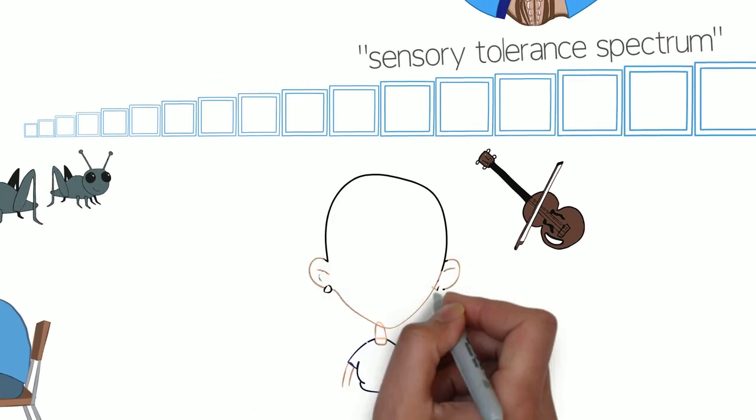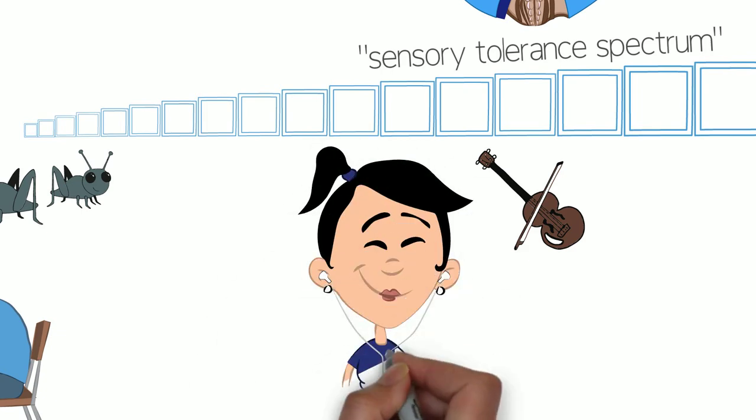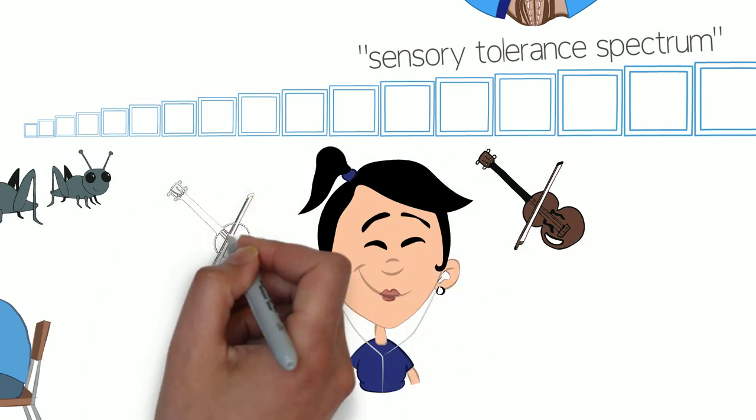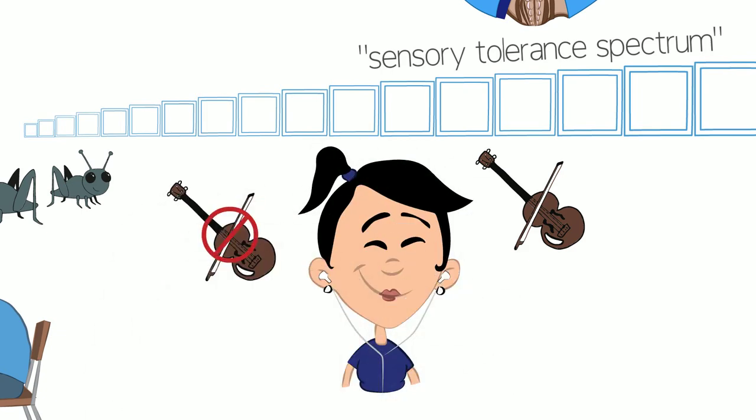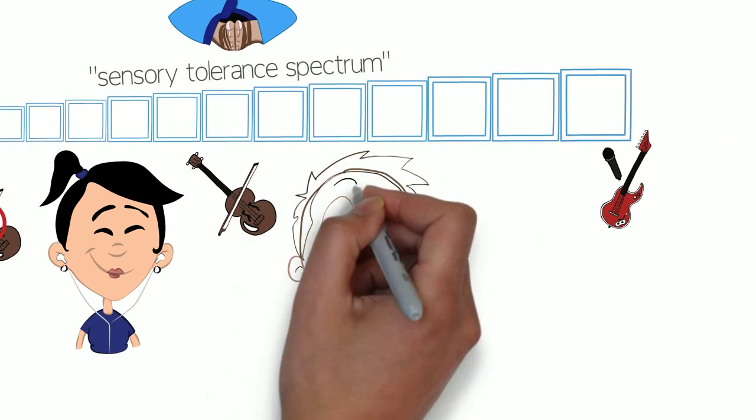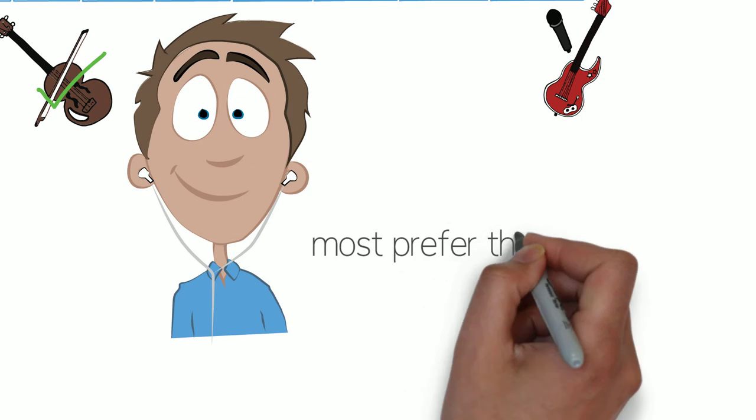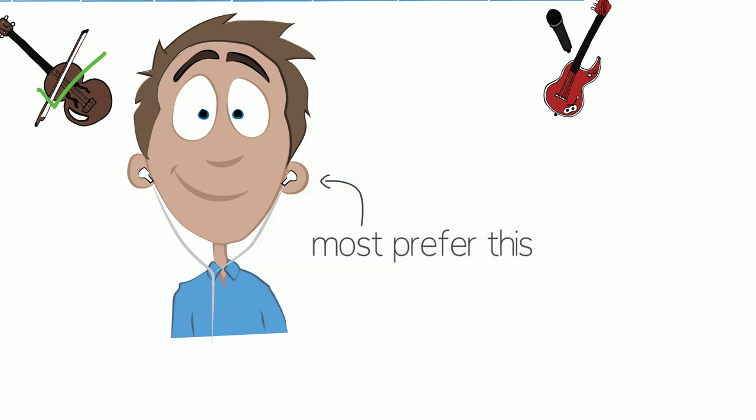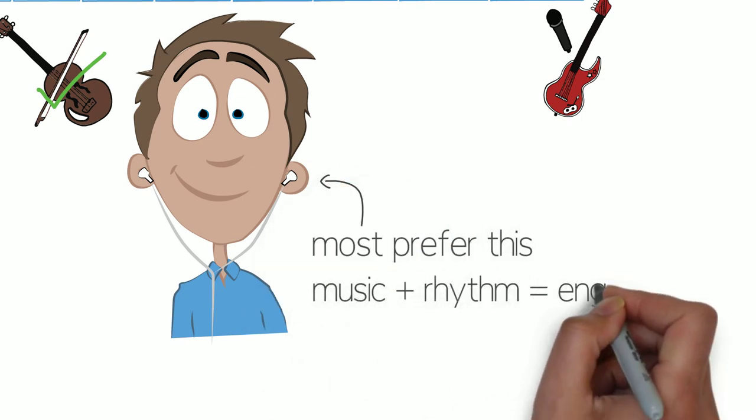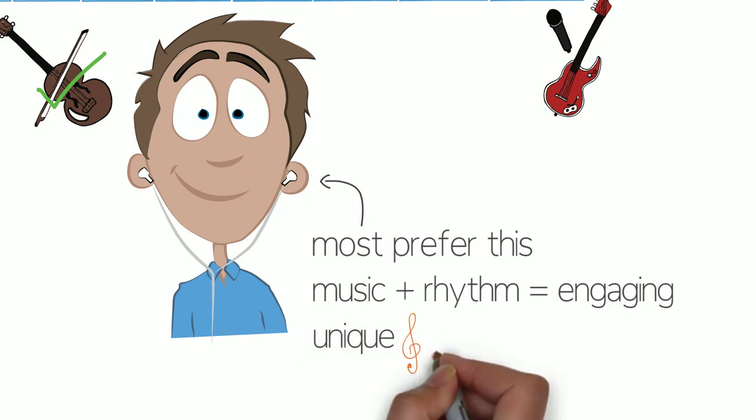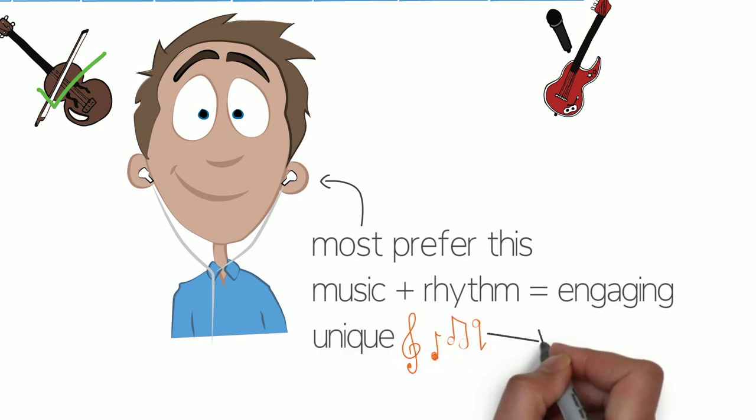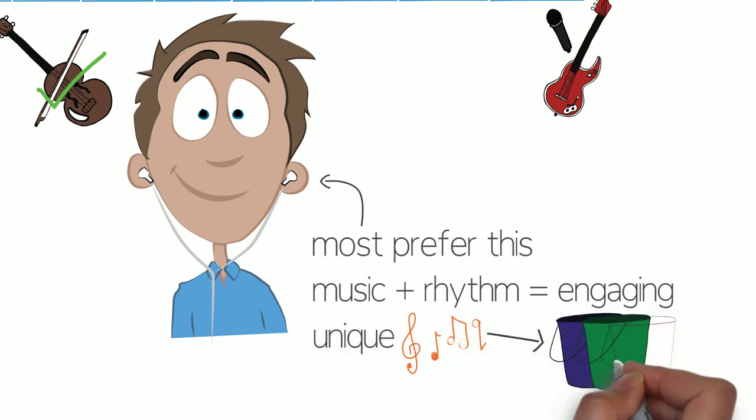Or towards the middle of the spectrum, you can read along silently while listening to the audio files without the background classical. And finally, higher on the spectrum, you can read along while listening to the audio files with the classical. By the way, survey responses from past users suggest most people prefer this approach, finding the music and rhythm engaging. Plus, each track has a unique classical background song, hopefully further aiding with chunking.